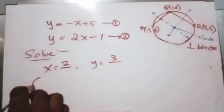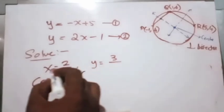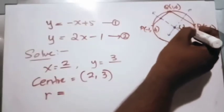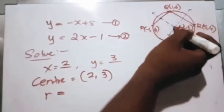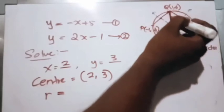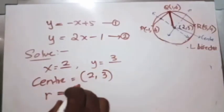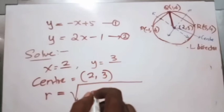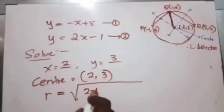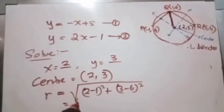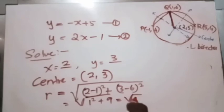So the center of the circle is (2, 3). Now we need to find the radius. With the center known at (2, 3), it's straightforward. The radius equals the distance between Q(1, 6) and the center (2, 3): root of (2 minus 1) squared plus (3 minus 6) squared, which equals root of 1 plus 9, giving radius equals root 10.